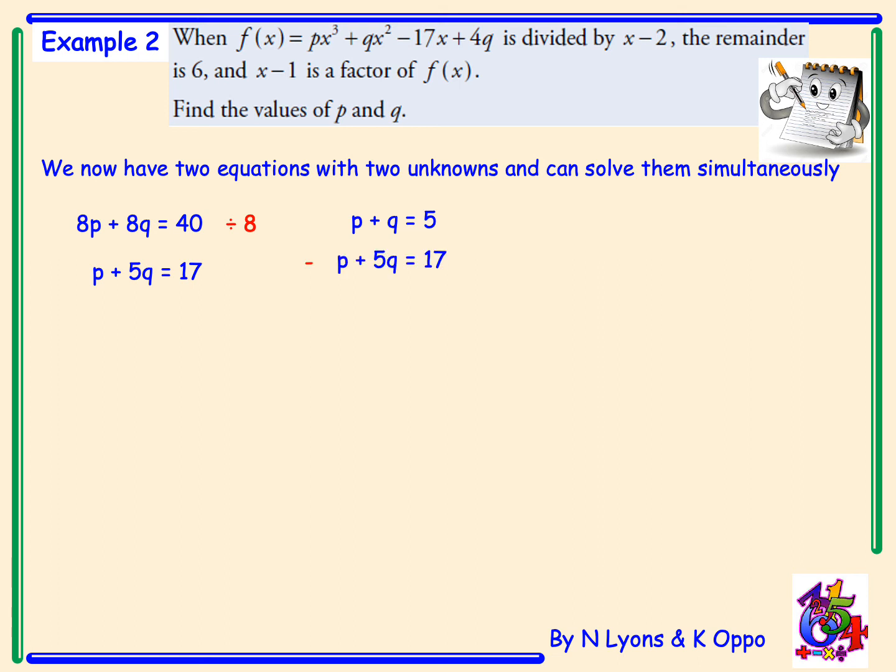Writing my bottom equation underneath, I'll then need to subtract to eliminate my p's. q take away 5q is negative 4q, and 5 subtract 17 is negative 12. Dividing by negative 4 gives an answer of q is equal to 3.